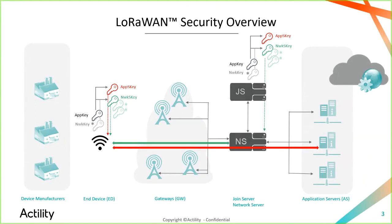Let's dive into LoRaWAN security. LoRaWAN is a very secure system providing all security built-in: data confidentiality via application session key encryption from device to the cloud, data integrity and authenticity where LoRaWAN frames are secured with message integrity codes and encrypted using the network session key, and defense against replay attacks via monotonic frame counts for the join procedure and data exchanges.